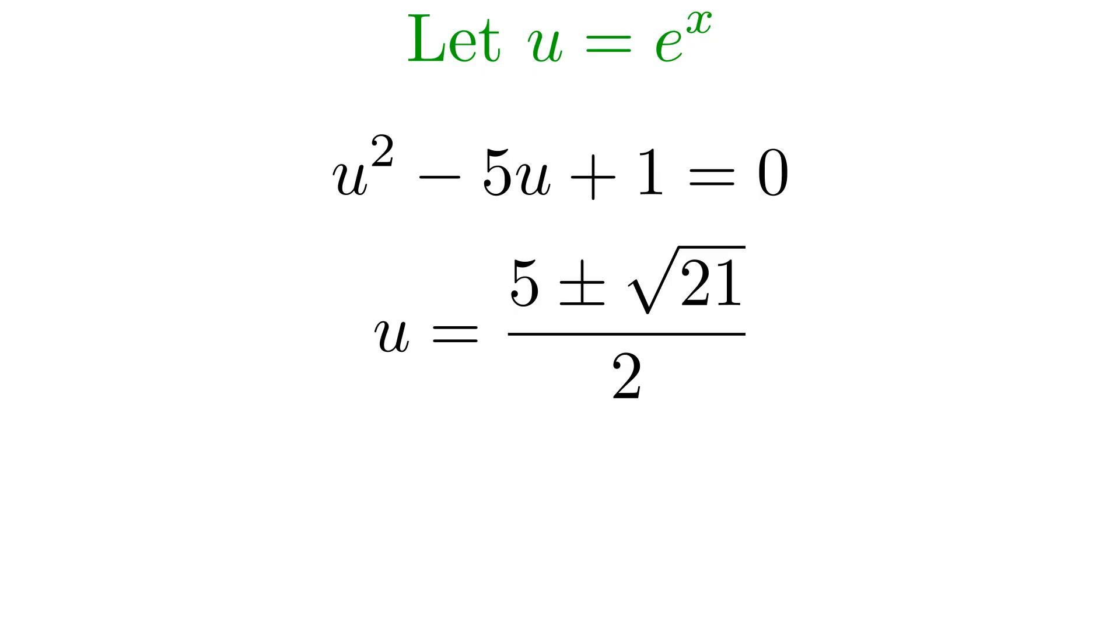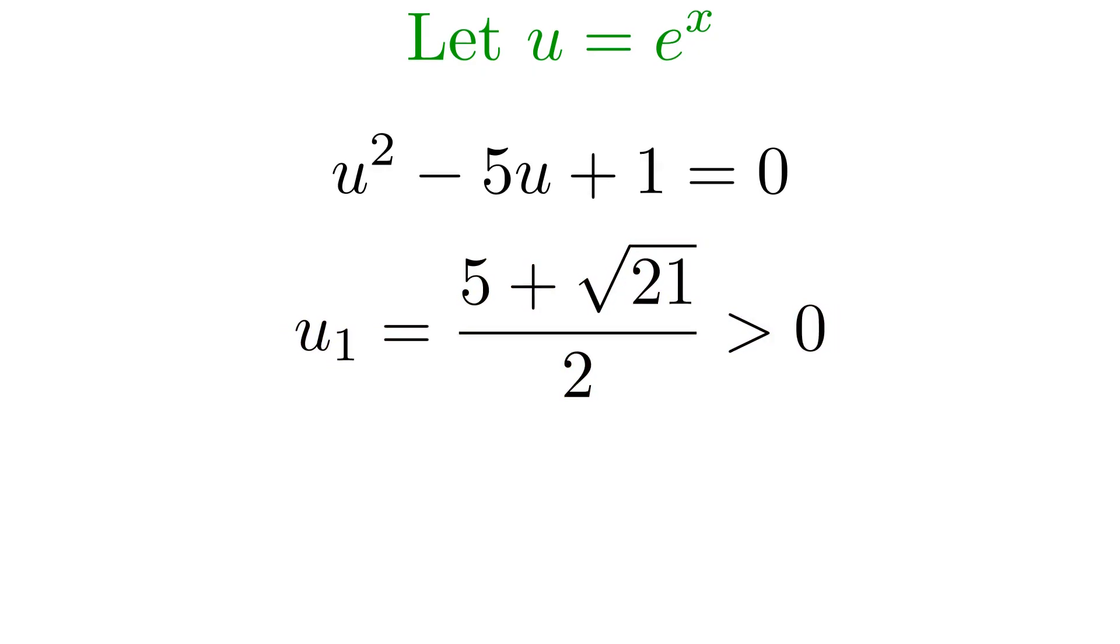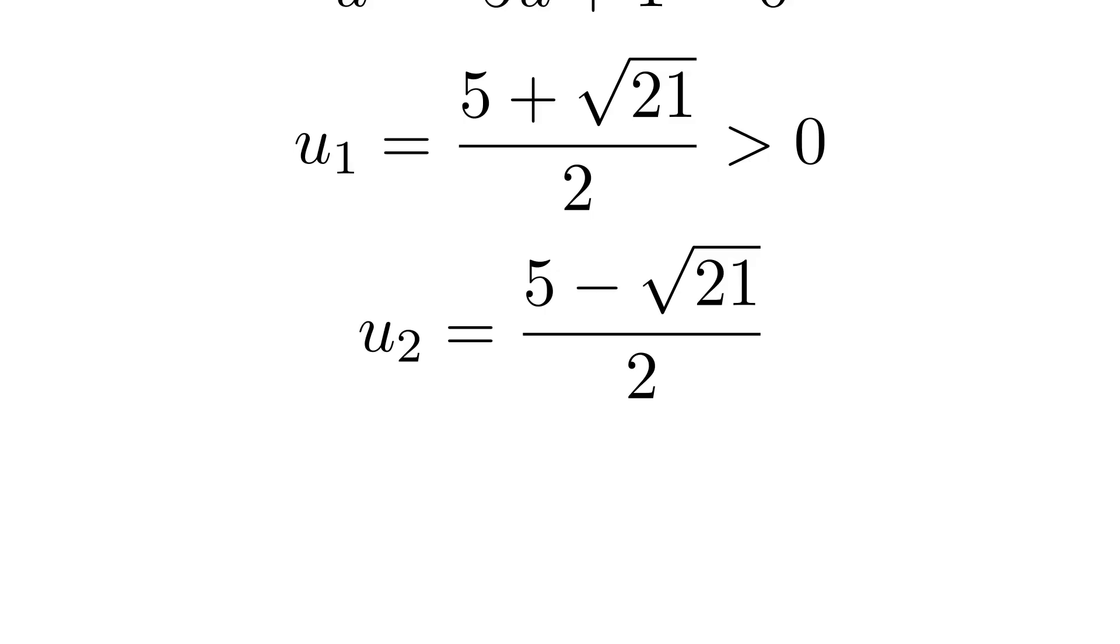Now, before we get too excited, we need to pause and ask, do both of these values actually make sense for our original problem? Remember what u represents, it's e to the power of x. And here's a key fact about exponential functions: e to any real power is always positive. It never equals zero, and it's never negative. So both of our u values need to be positive. Let's check whether they are. The first solution, where we add 5 and the square root of 21, is obviously positive, since we're adding positive numbers. But what about the second one? When we subtract the square root of 21 from 5, do we still get something positive?